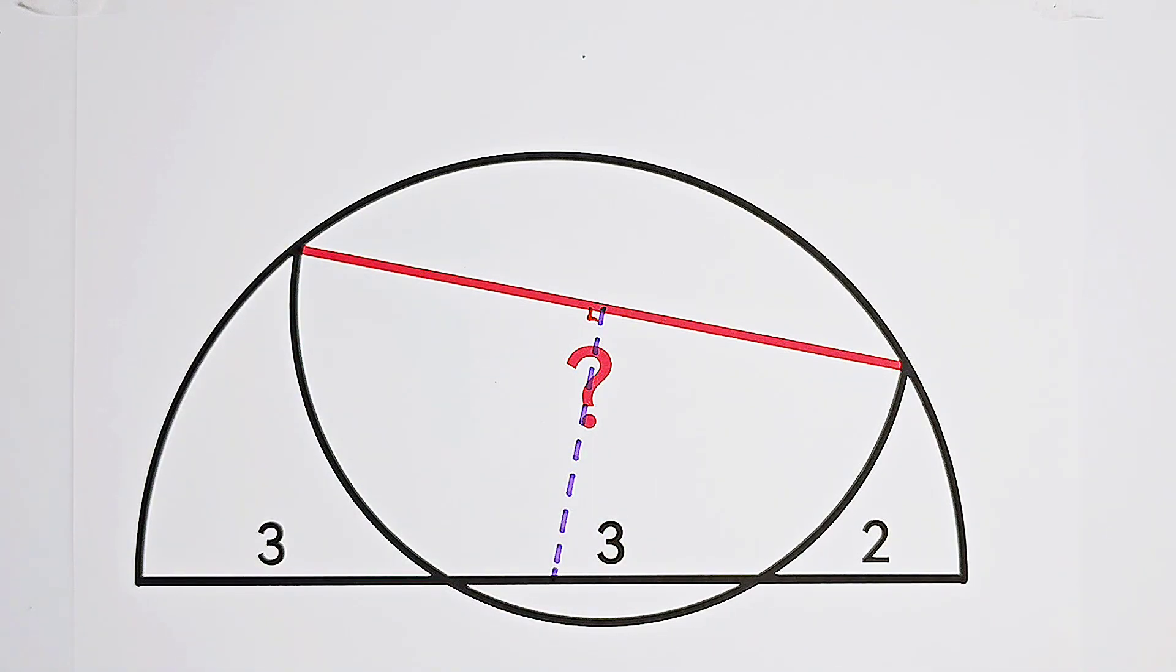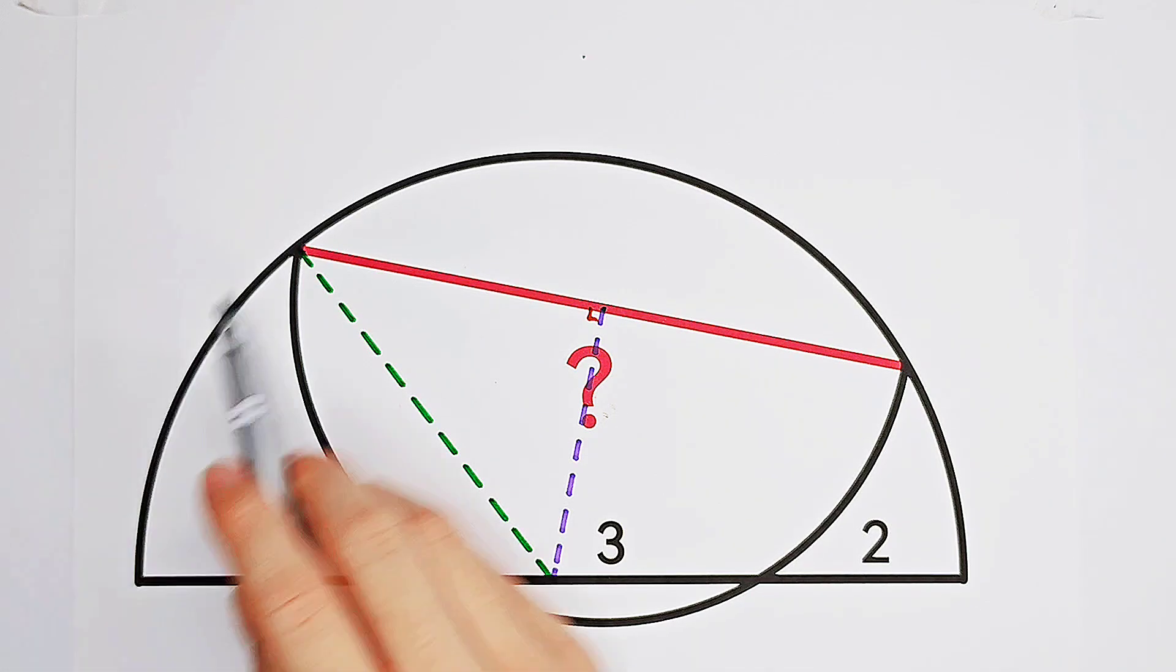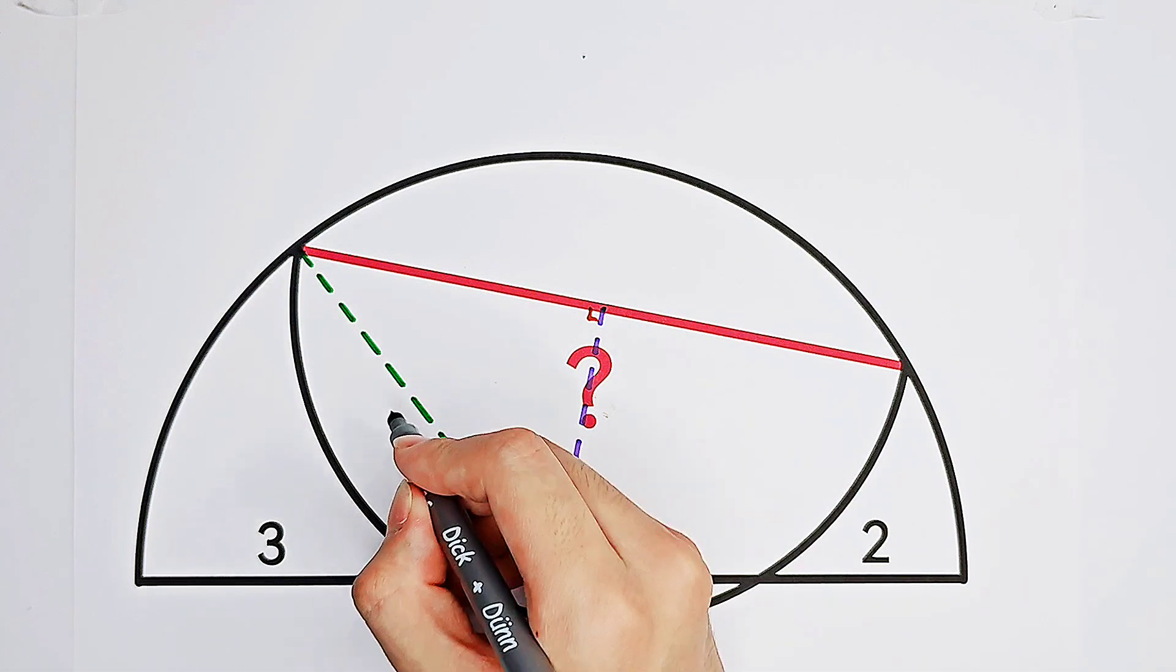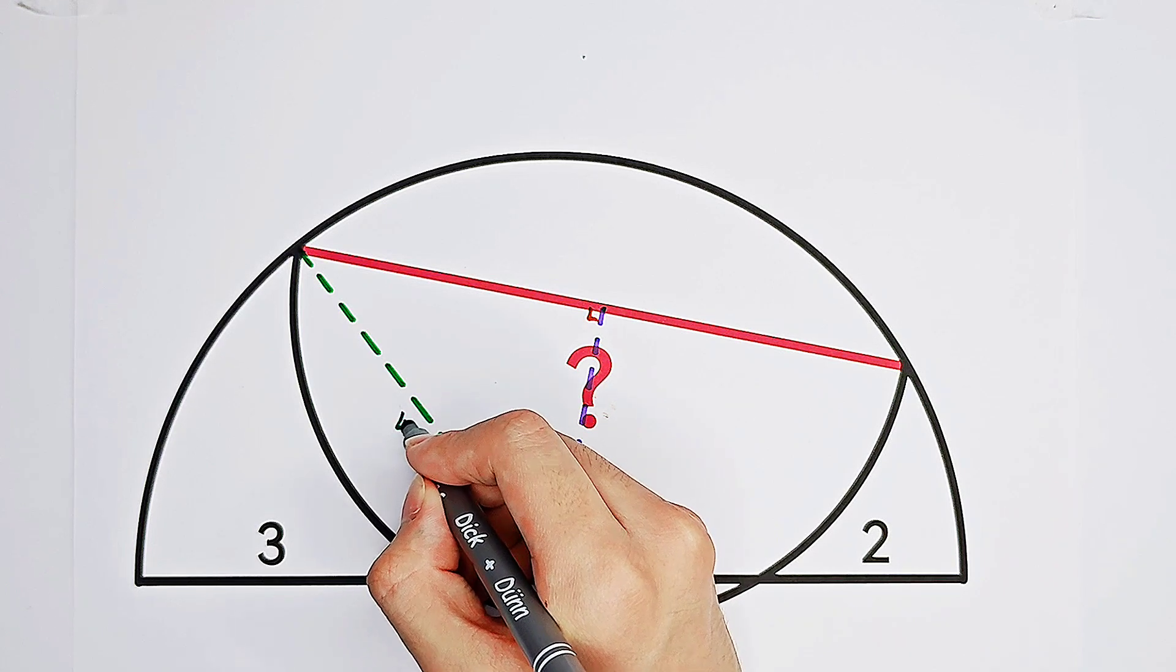But we can connect these two points. And, you know, there will appear another radius. This green one is the radius of our big semicircle, which measures 4.